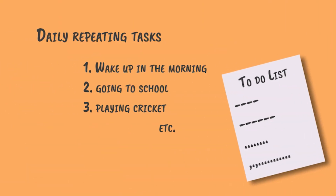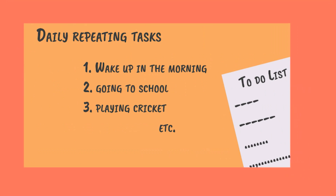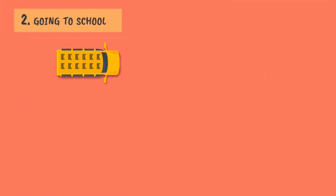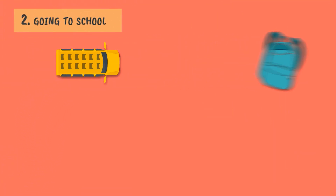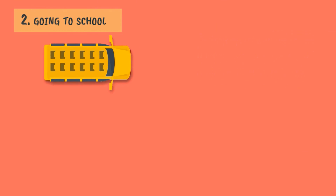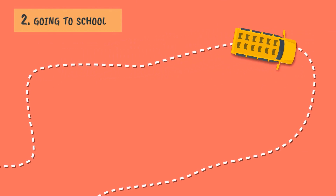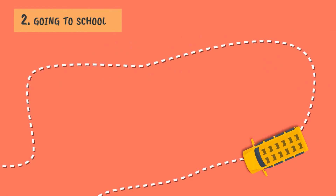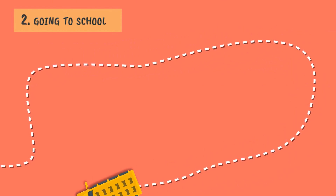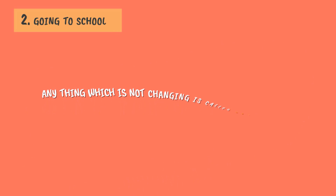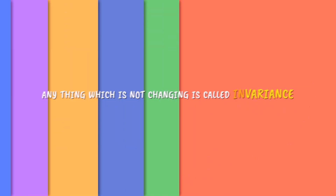In the task of going to school, there might be something that will be changing, like the seat you sit in on the bus, the book you carry in your bag, etc. But there are also things which are not changing, like the bus itself, the route of the bus, etc. This not-changing variable — basically anything which is not changing — is called invariance.